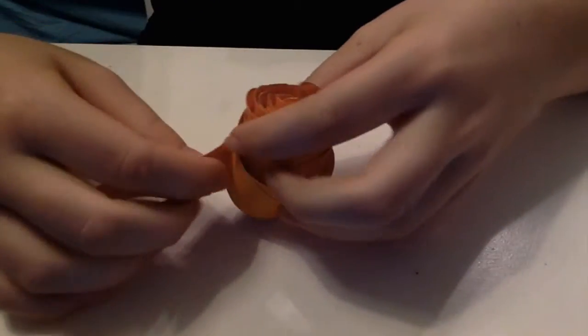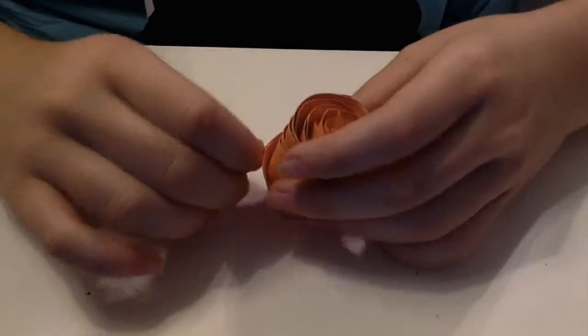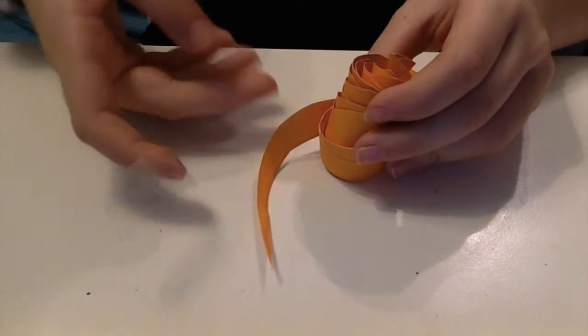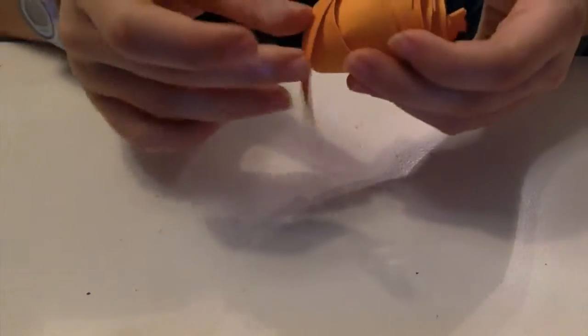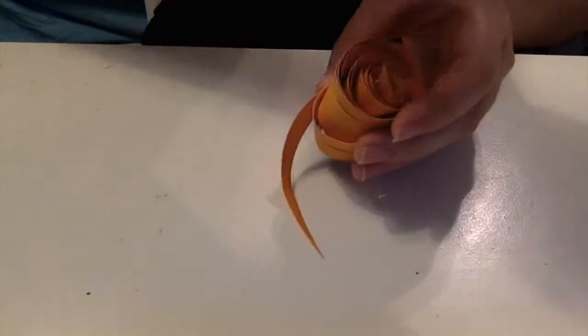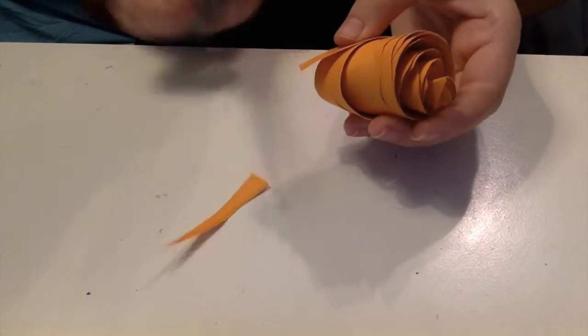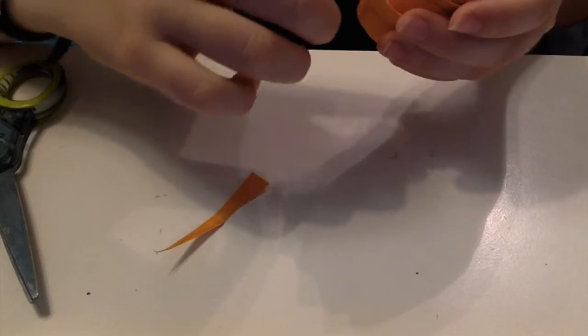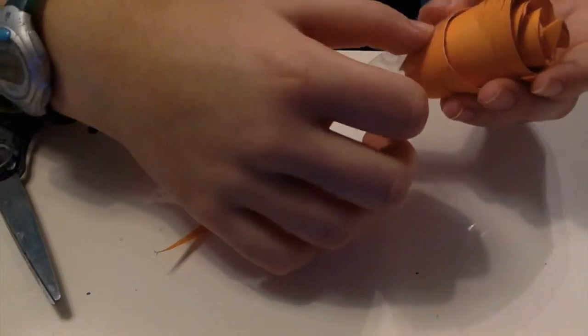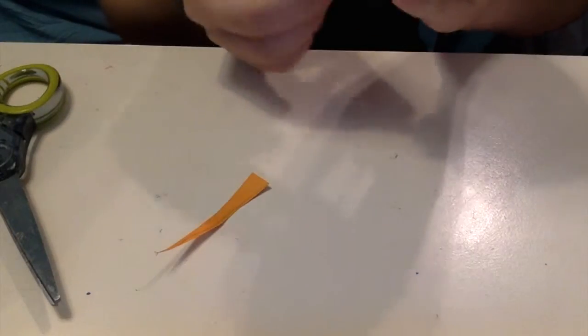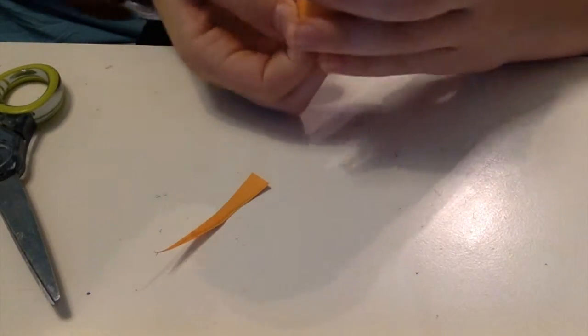So you're just going to finish wrapping it up and take your tape. Put it on your finger. Then you're going to take your scissors and cut the end off because that's not very pretty. Then you're going to tape right here and tuck that under.